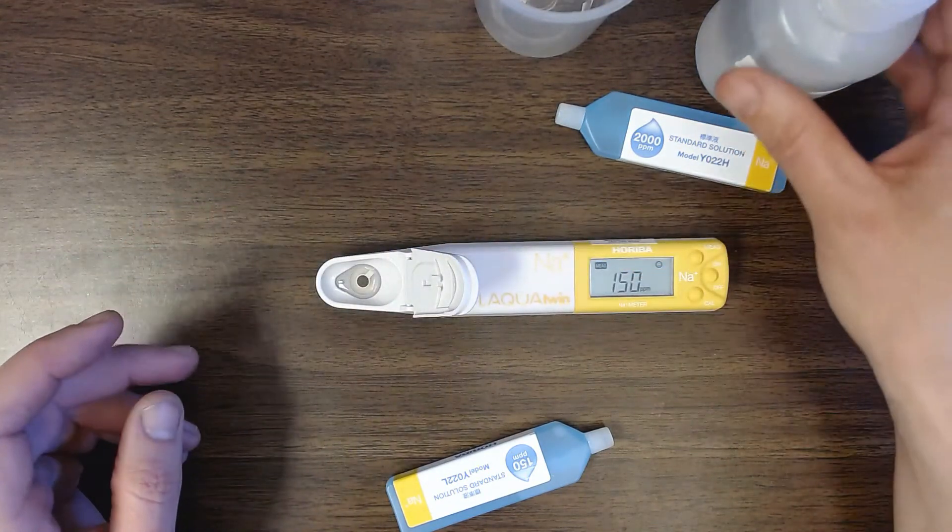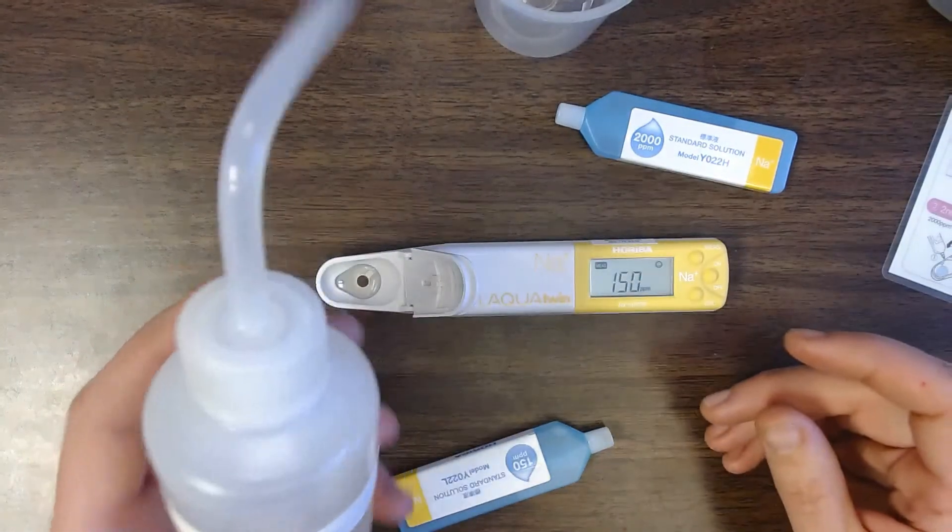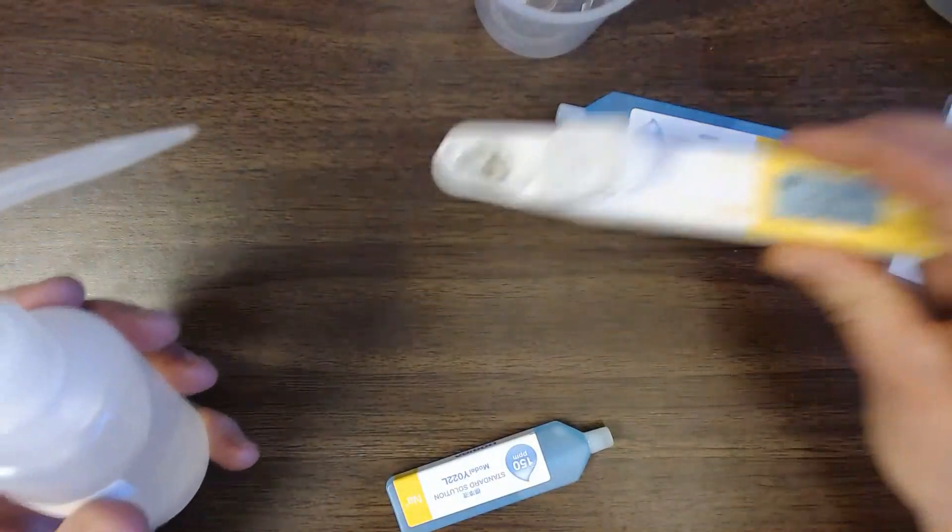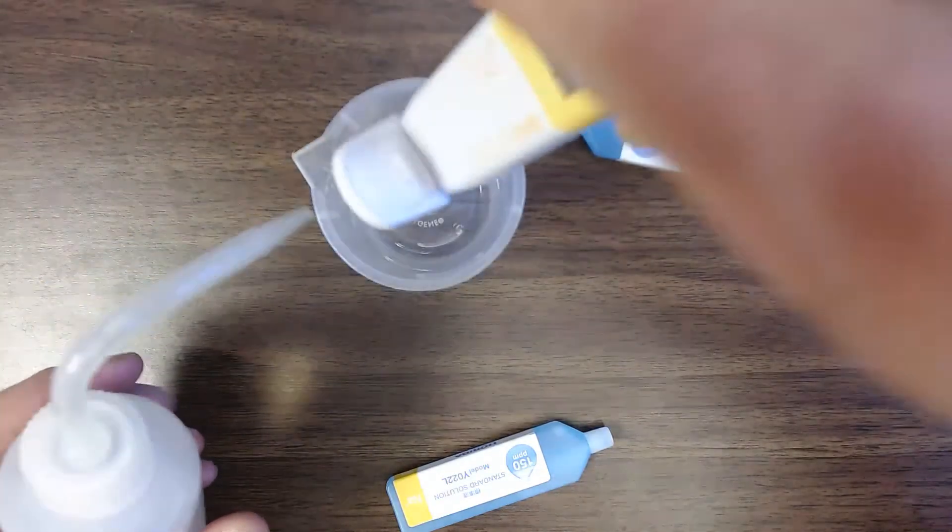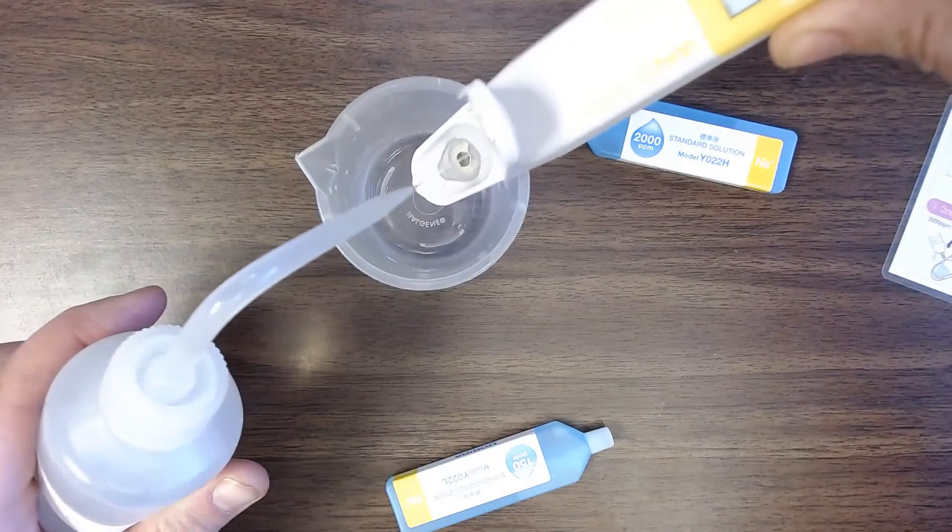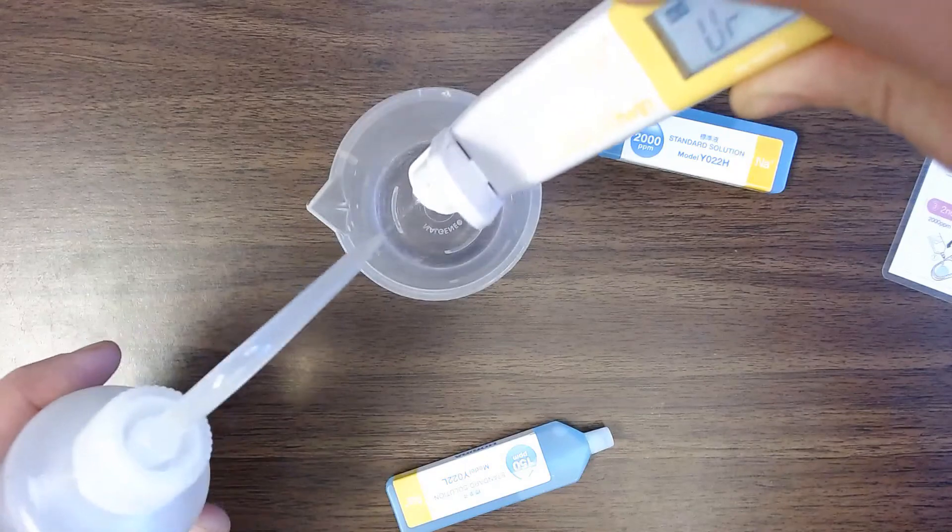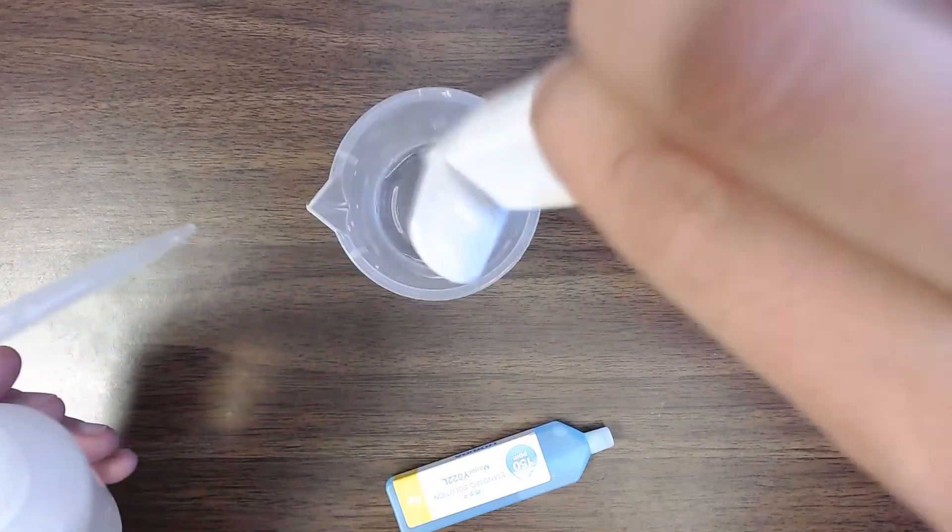Then I need to clean this solution out. So to do that I'm going to take some deionized water here. And I'm going to use a little beaker. I'm going to just dump out that initial solution. And I'm going to rinse off the electrode with the DI water. Okay get rid of that.